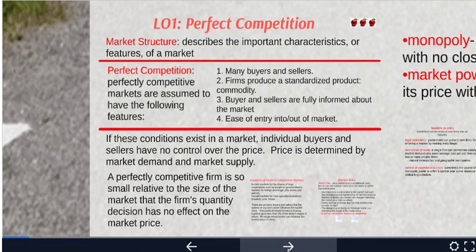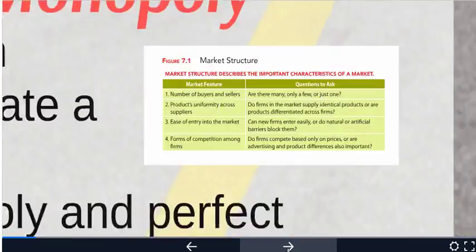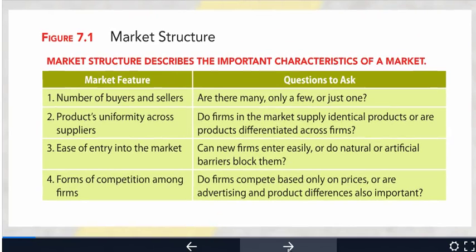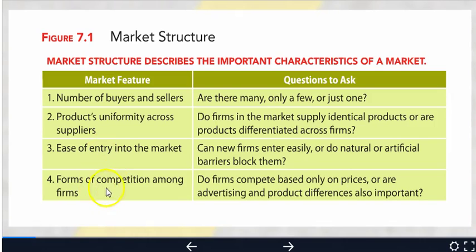The fourth characteristic is that firms can easily enter or leave the market — there are no obstacles preventing new firms from entering profitable markets or preventing existing firms from leaving unprofitable markets. For perfect competition, the market features are: many buyers and sellers, a standardized product, easy entry and exit, and competition based on price.